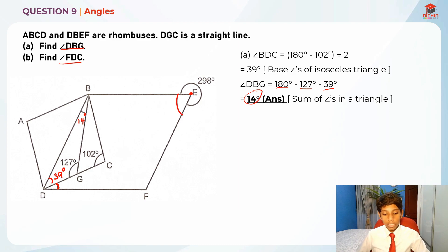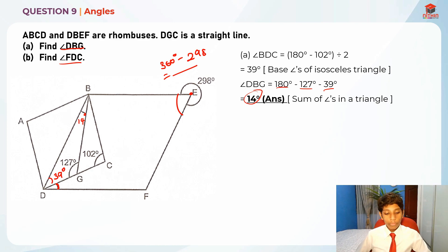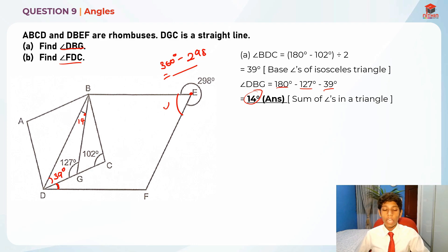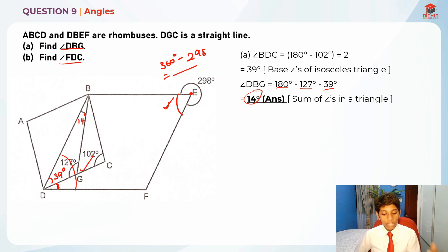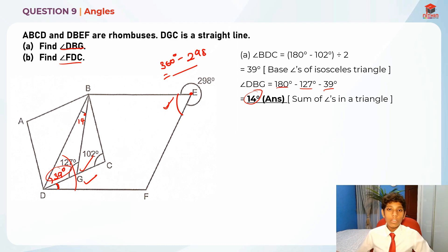What we're going to do is find angle BEF by taking 360 degrees minus 298 degrees, which gives us some value. With that we know angle BEF, and then it is really simple to find angle BDF — because opposite angles in a rhombus are equal. In order to find angle FDC, we take that whole angle minus 39 degrees.